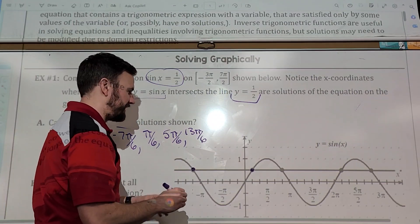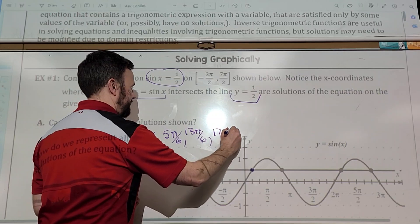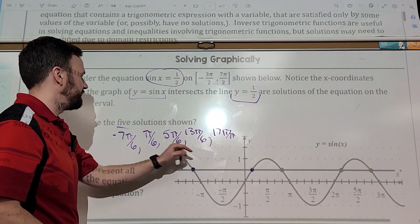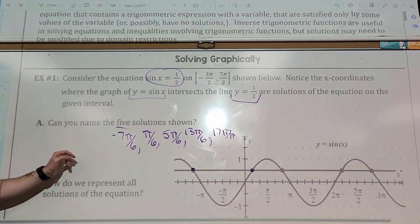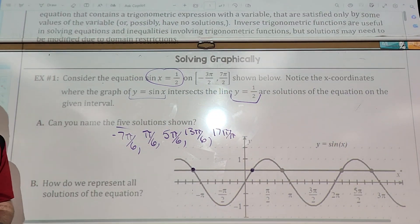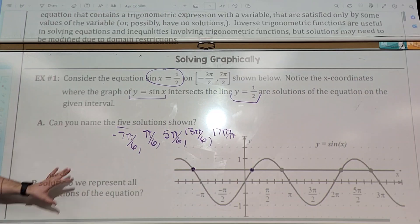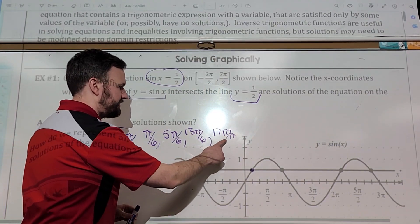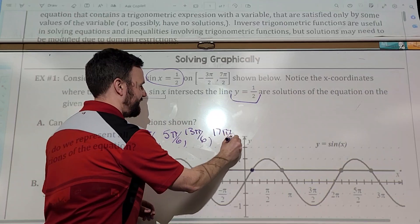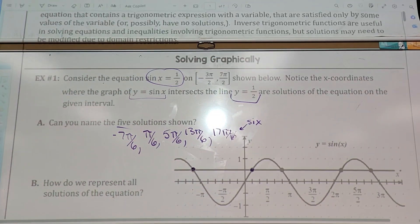So that would be negative seven pi over six, because it's one more than six over six. That would be a positive pi over six. That would be a five pi over six, one less than six pi over six. This would be a 13 pi over six. What am I adding to it each time? Well, actually, it's not consistent. Don't do it that way. I'm just kidding.